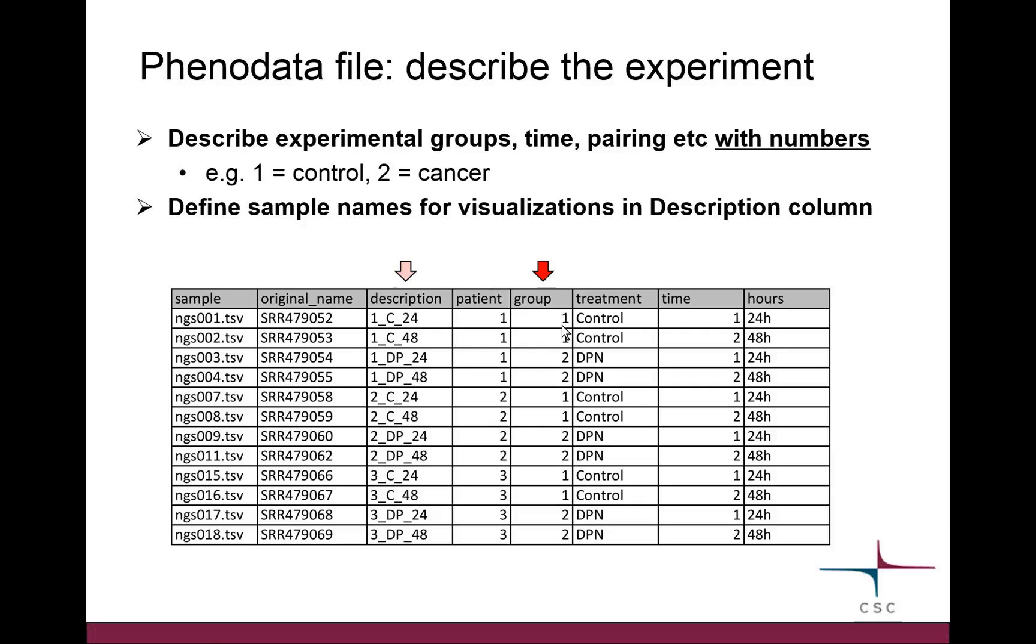If you wrote text here, say your groups were control and cancer, that would work. Chipster wouldn't complain about it, but it would calculate the fold changes the wrong way around because it would just take those words alphabetically. Cancer with 'ca' is before control which is 'co'. So that's why to be on the safe side, it's better to use numbers here. Of course, you are most welcome to write extra columns for yourself to remember. In my case, my groups are my treatments: control treatment and DPN chemical treatment. This is just for myself to remember what the numbers are.